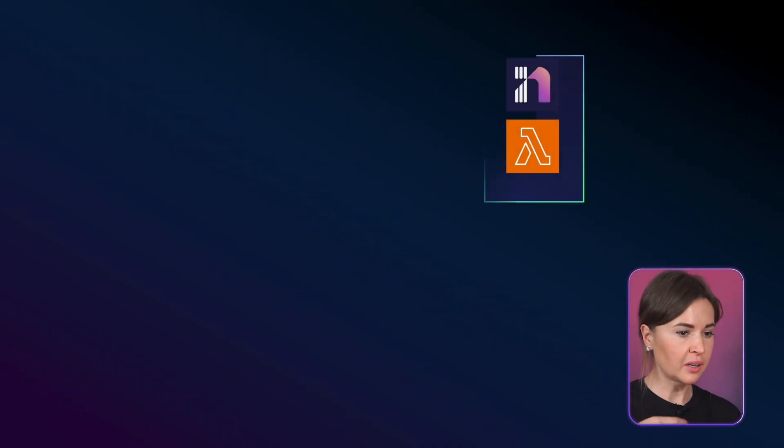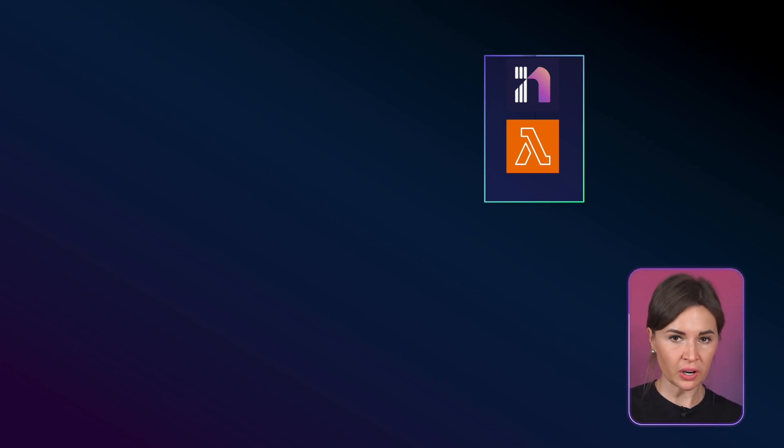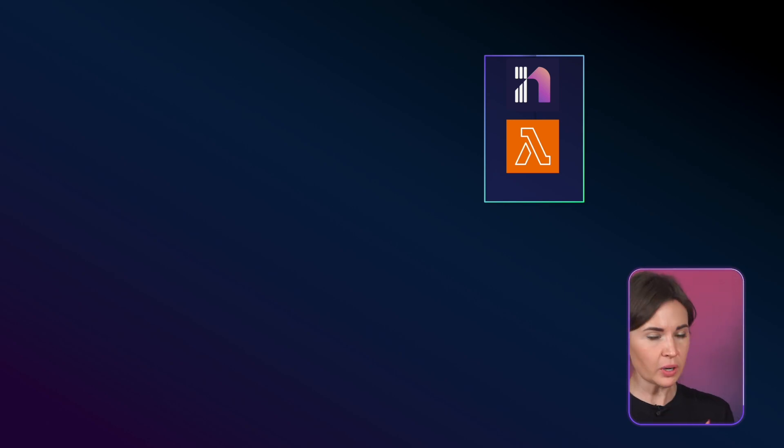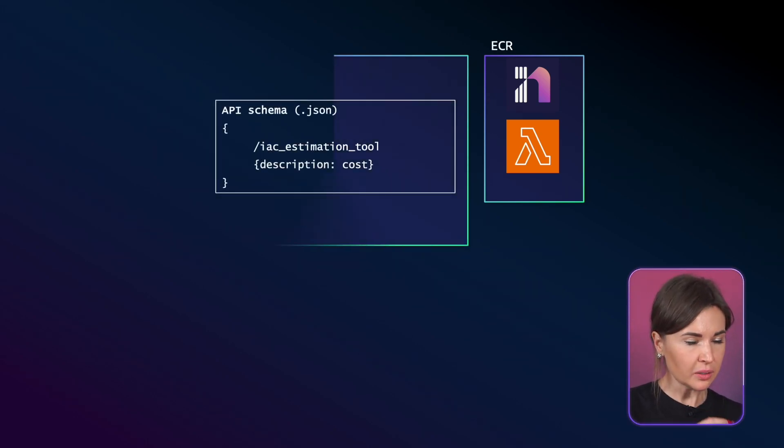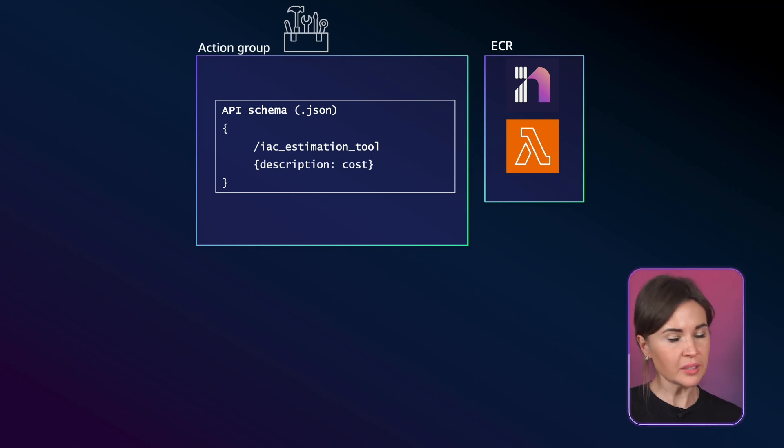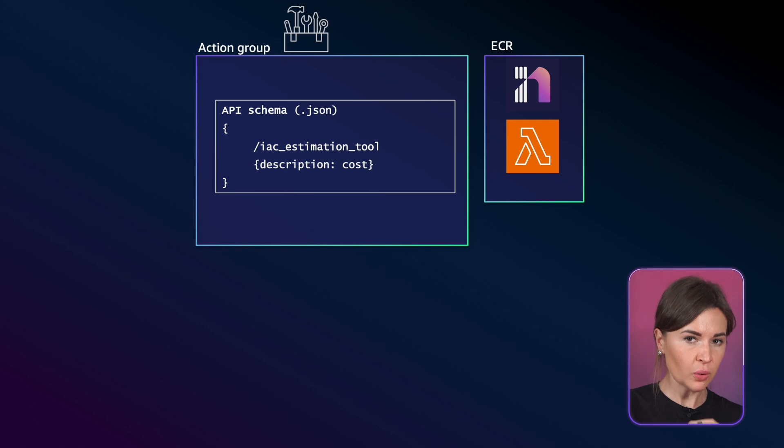Let me make sure I understand — I'll try to summarize it. First, we created a Lambda function that has access to the open source tool InfraCost, which can use a Terraform file to estimate the cost. We put this inside an ECR container. Then we had to create an API schema that was aware of this tool and provide a description that this tool is particularly built to estimate cost. This part is really important — the description needs to be in plain English, because the LLM will read through it to understand what the function is actually doing. So when you call it in the prompt, it will understand based on the descriptions that you're asking about estimating the cost, and it will match the tool's description to your task.